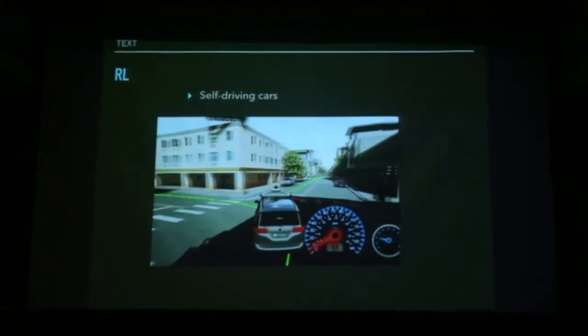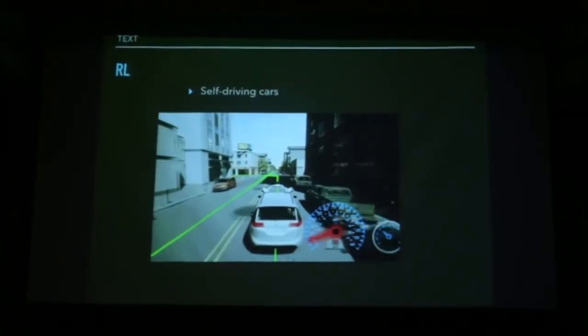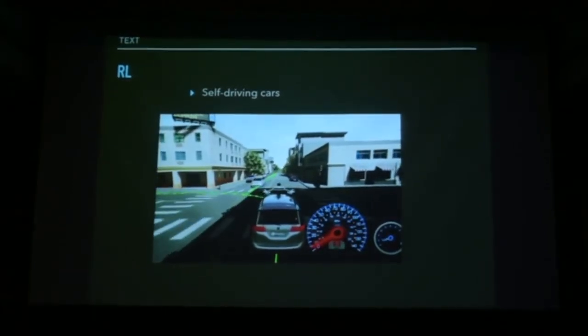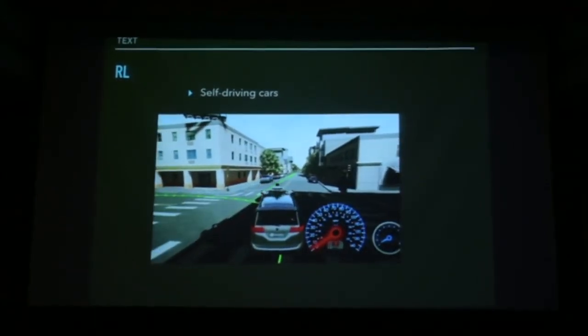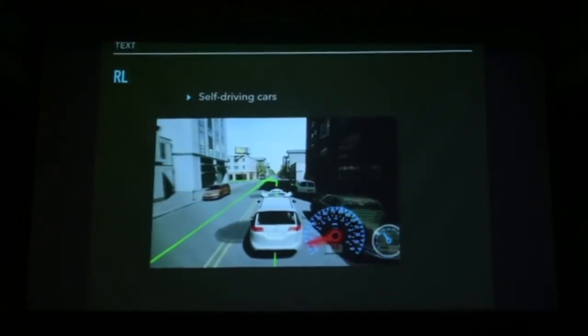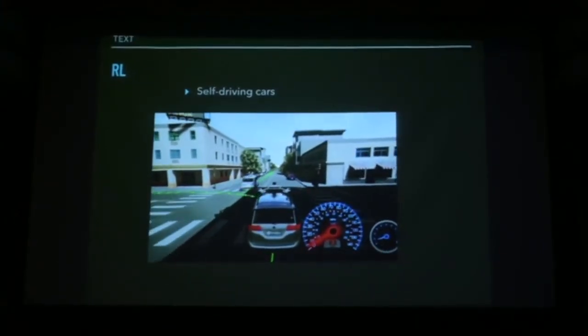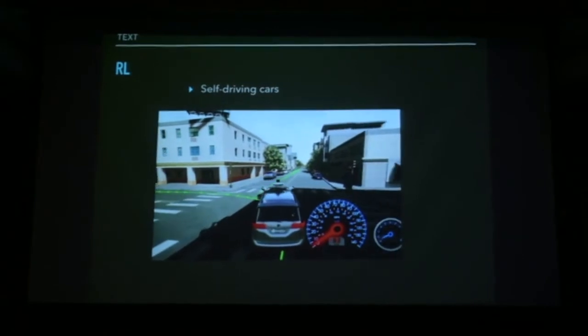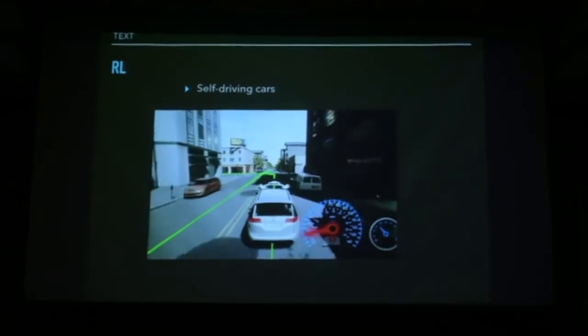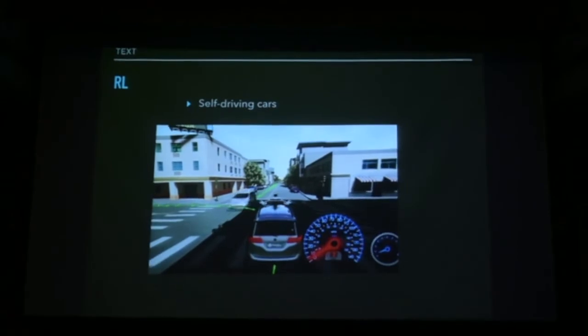And you all have heard of self-driving cars. These use this idea of reinforcement learning. So this car has to learn, or the software that runs in this car has to learn, that when it reaches an intersection, and sees cars coming from this direction, it has to make a left turn, it has to wait before these cars go, and then only it can make a left turn. Now, of course, when these cars are trained, from day one, they cannot be left on the streets, because then you make a wrong move, and hit people, or hit some other cars. So these have to be extensively trained at the software level, in the lab with simulators, before they are actually put to work.